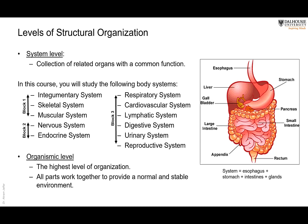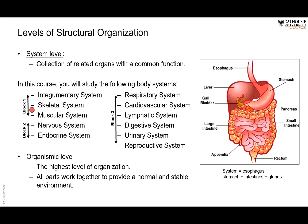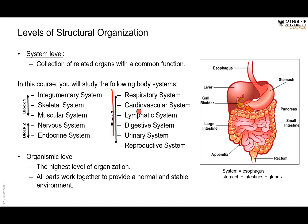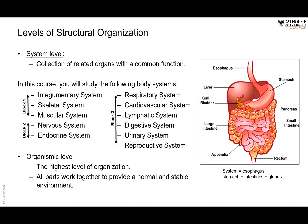In block one, after dealing with histology — four lectures of cytology and histology — we are going to deal with the integumentary system, which means the skin in one way or another. Then the skeletal system: bones and cartilages, and then the muscular system: skeletal muscles. In block two, we will deal with the nervous system and the endocrine system. In block three, we will deal with the other systems: respiratory, cardiovascular, lymphatic, digestive, urinary, and reproductive. These systems together constitute the highest level of organization — the organismic level.